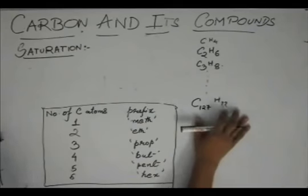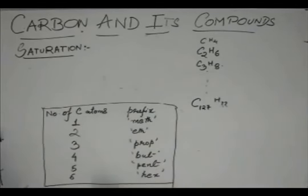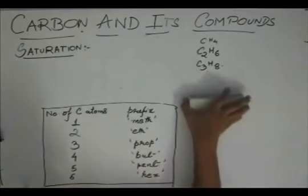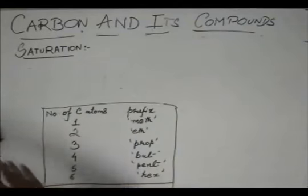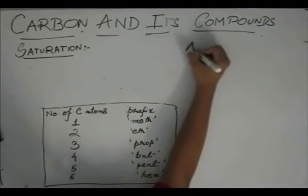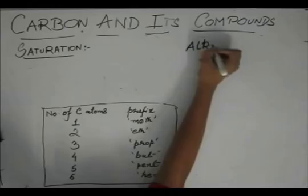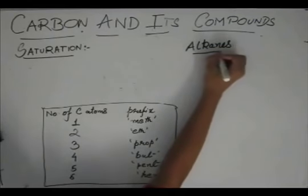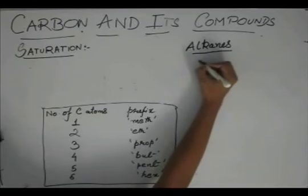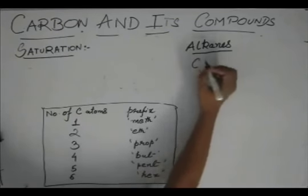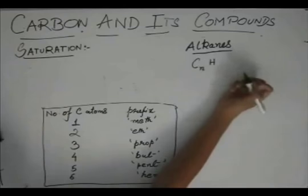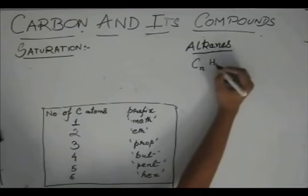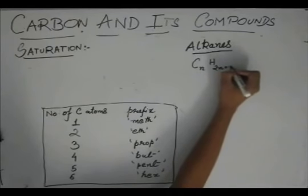This will require a lot of time and energy. We have a simple formula that in case of alkanes, if the number of carbon atoms is N, then the number of hydrogen atoms in that compound will be 2N plus 2.